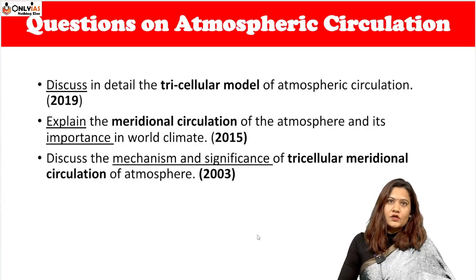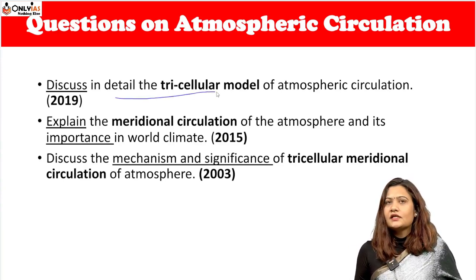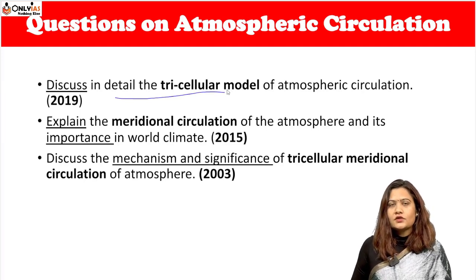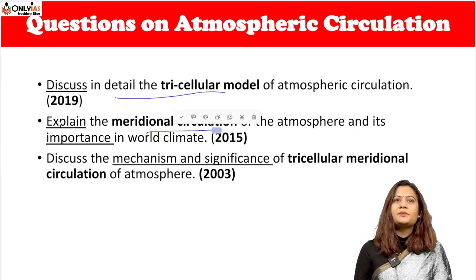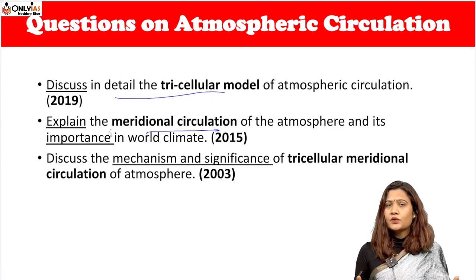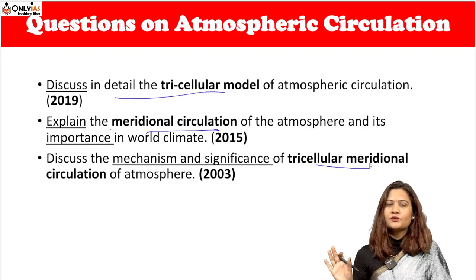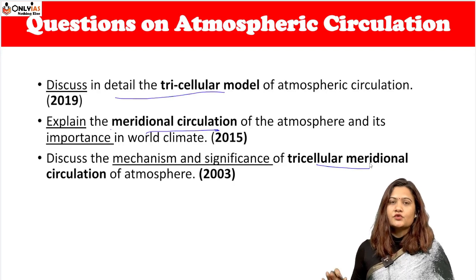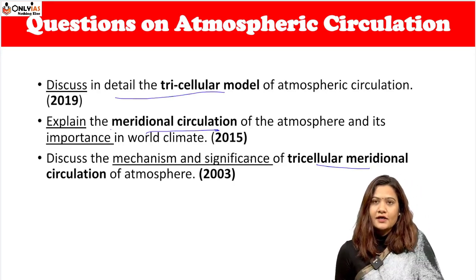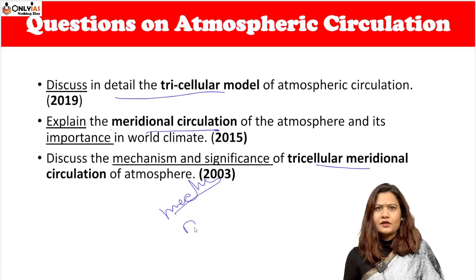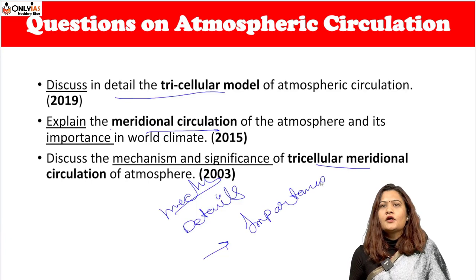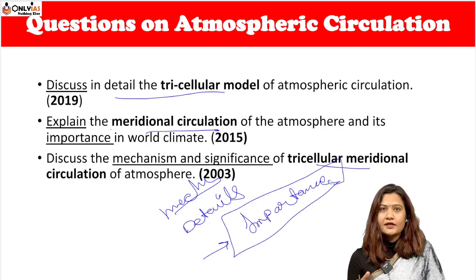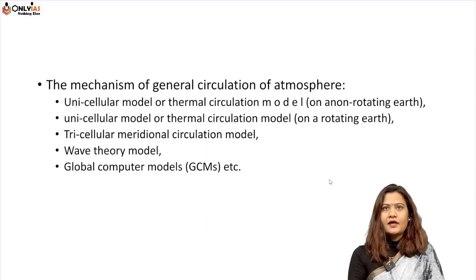Questions on atmospheric circulation: the first question is 'Discuss in detail the tri-cellular model of atmospheric circulation' (2019). Then 'Explain the meridional circulation of the atmosphere and its importance in world climate' — essentially the same question. The detail and importance aspects are very important to know, because heat and water circulate, and there are other advantages too.